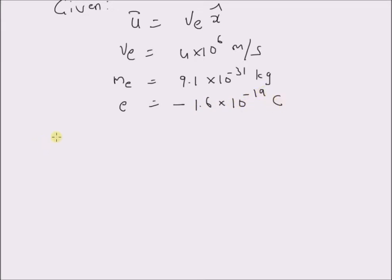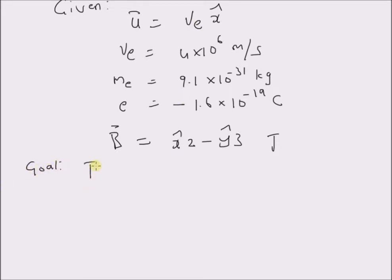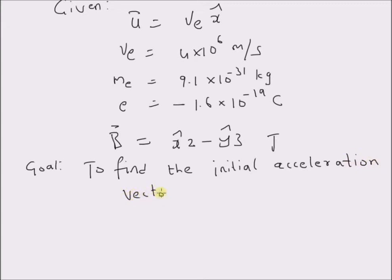The flux density of the magnetic field is given by b-bar is equal to x-cap 2 minus y-cap 3, and the units are of course Tesla. Given this information, our goal is to find the initial acceleration vector a-bar of the electron.